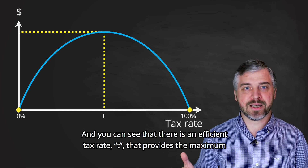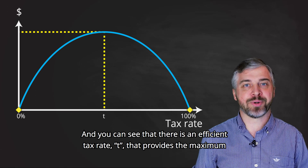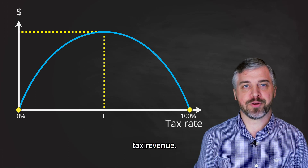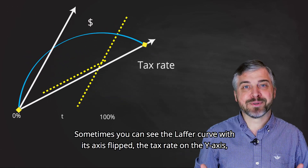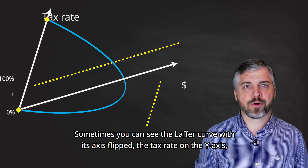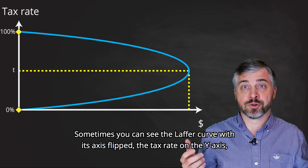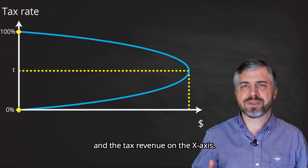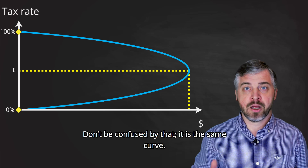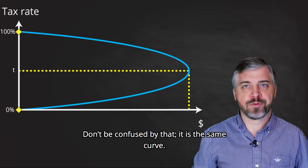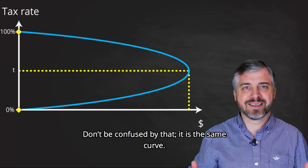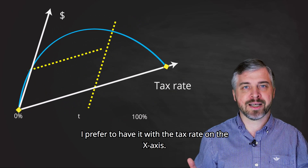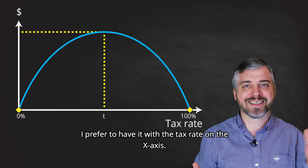you get a nice bell curve. And you can see that there is an efficient tax rate T that provides the maximum tax revenue. Sometimes you can see the Laffer Curve with its axes flipped — the tax rate on the Y axis and the tax revenue on the X axis. Don't be confused by that; it is the same curve. I prefer to have it with the tax rate on the X axis.